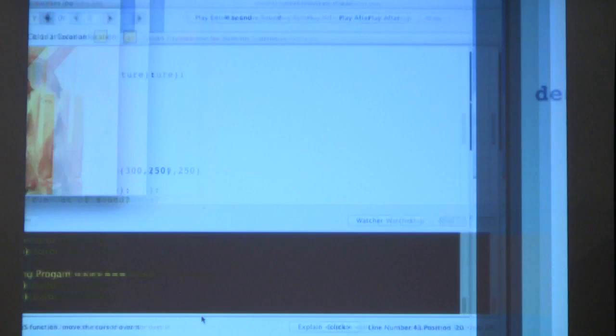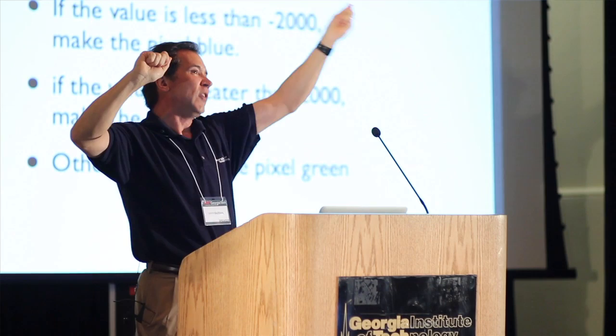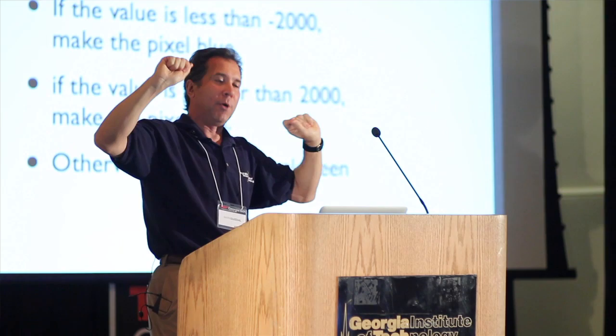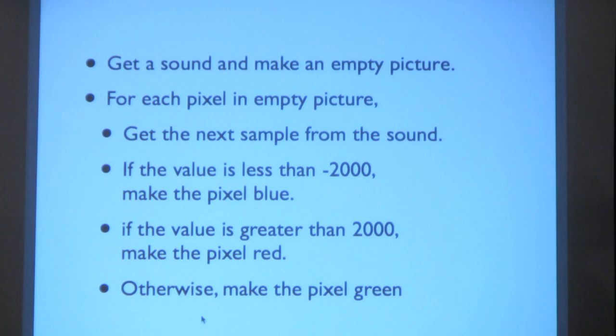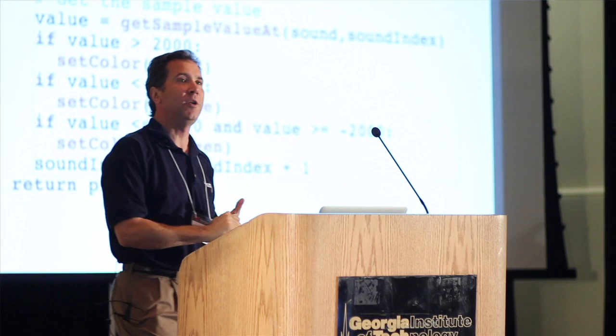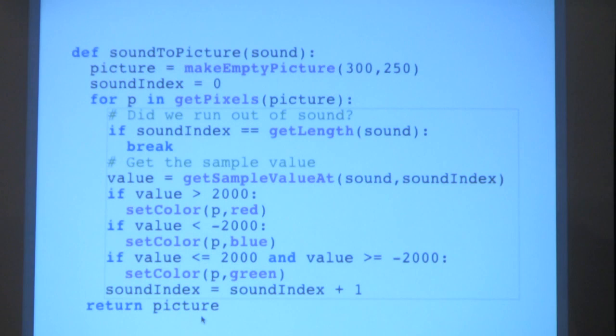What I'm going to do is I'm going to take a sound and I'm going to take an empty picture. I'm going to make a correspondence, a mapping between each of the pixels and a sample. As I take each of the pixels in this empty picture, I'm going to grab another sample from the sound. If the value of that sample is less than negative 2,000, I'm going to make the corresponding pixel blue. If it's greater than 2,000, I'm going to make the pixel red. If it's in between, I'm going to make the pixel green. Do everybody follow the mapping? It's not really that complicated.